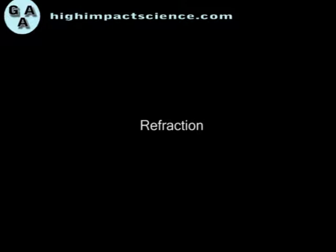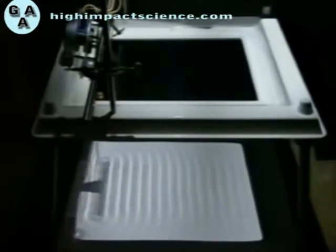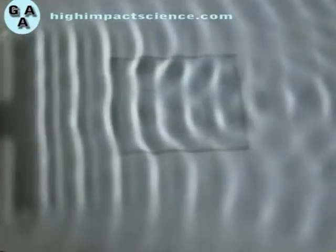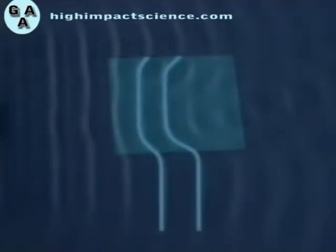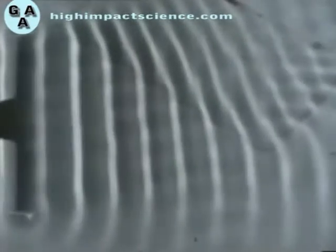Refraction occurs when waves move from one medium to another, whether it's water, sound, or light waves. For example, it occurs when water waves move from a deeper to a shallow water region and vice versa. In the ripple tank, a plastic sheet makes part of the tank shallower than the rest. Waves travel more slowly in shallow water. This change in speed changes the wavelength — the wavelength on the shallow side is shorter. When the sheet is at an angle, the wave also changes direction; the wave fronts bend as they reach the plastic sheet.